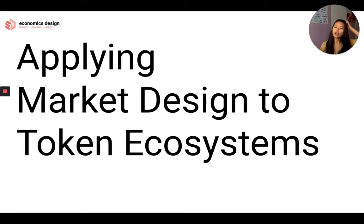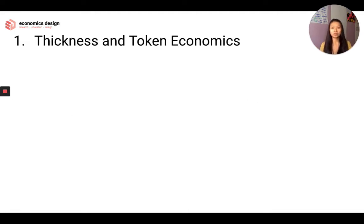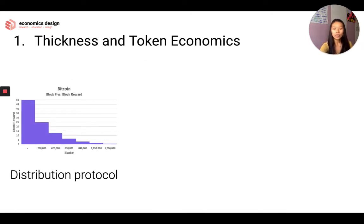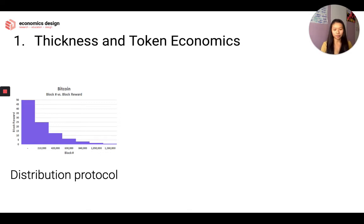That's a nice theory. But the important thing is: how can we apply market design to token ecosystems? First is thickness. How can we improve thickness in your token ecosystem? We can look at the distribution protocol — some call it the Nakamoto protocol, or Satoshi protocol — where at first you have a lot of rewards and then they halve by a certain number of periods. We can incentivize participation through this kind of distribution protocol, encouraging more people to join at first, rewarding early adopters for taking a higher risk.